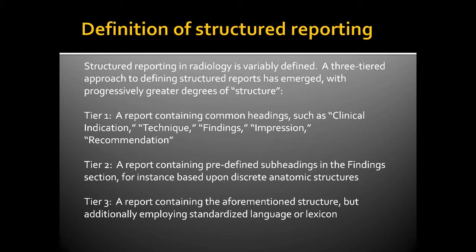A Tier 1 report contains common headings such as clinical indication, technique, findings, impression, and recommendation. A Tier 2 report contains predefined subheadings in the findings section, for instance based upon discrete anatomic structures. A Tier 3 report contains the aforementioned structure but additionally employs standardized language or lexicon.